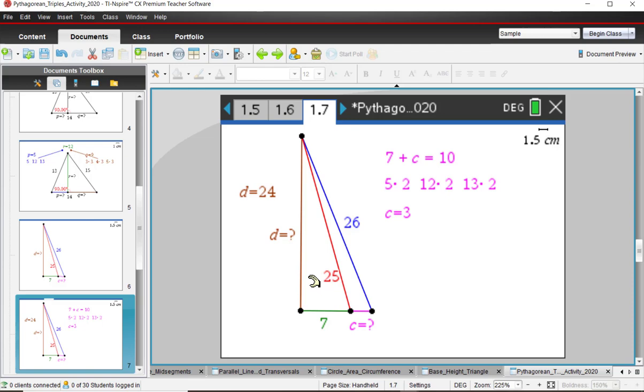So again, this is a 7-24-25, and then another Pythagorean triple is a 5-12-13. If you double everything, it would be a 10-24-26, so there's our 24, there's our 26. This has got to be 10, so C has got to be 3. Press pause as needed.